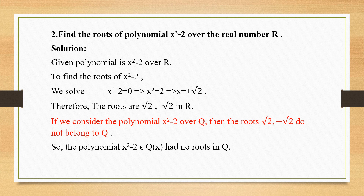As a contrast case, if we consider the polynomial x² - 2 over ℚ — the set of rational numbers — then the roots √2 and -√2 do not belong to ℚ. Not only ℚ, they do not belong to the complex numbers either, since there is no imaginary component. Therefore, if the field were ℚ or ℂ in this context, the polynomial would have no roots there.